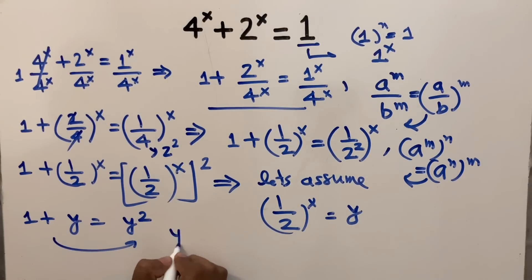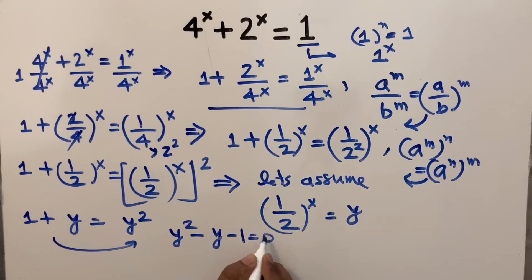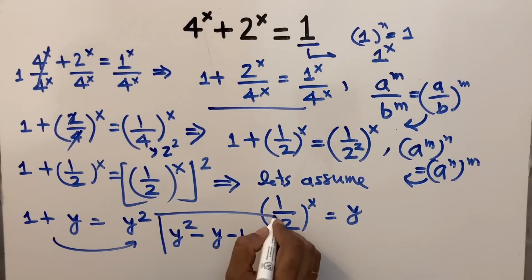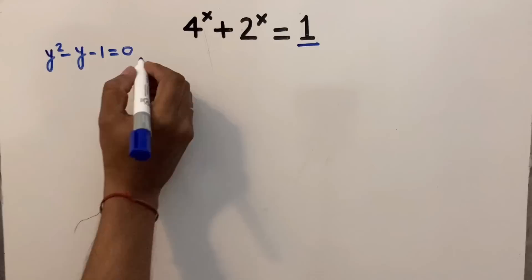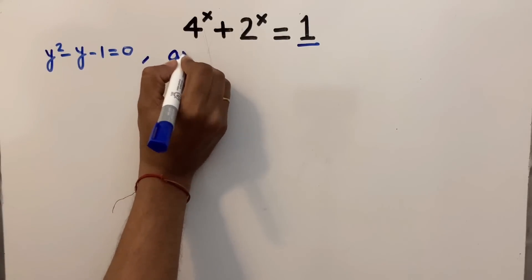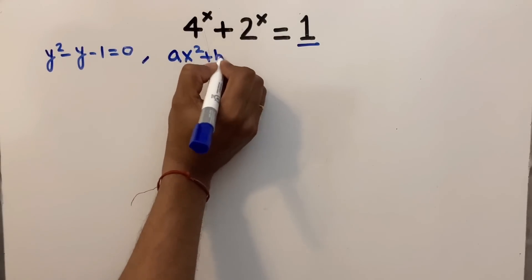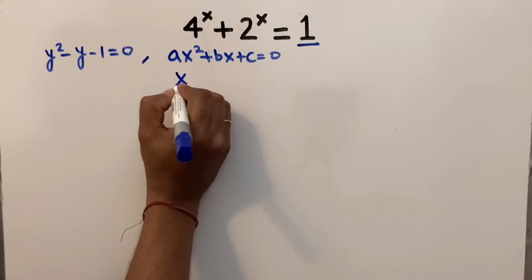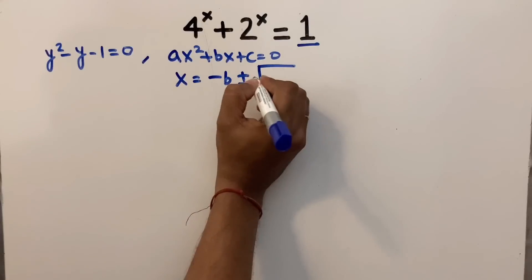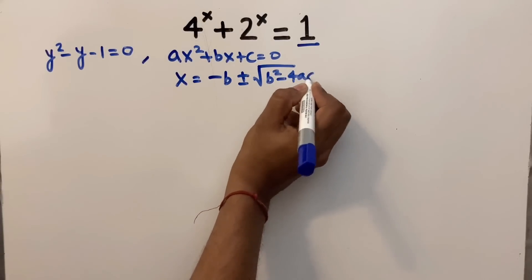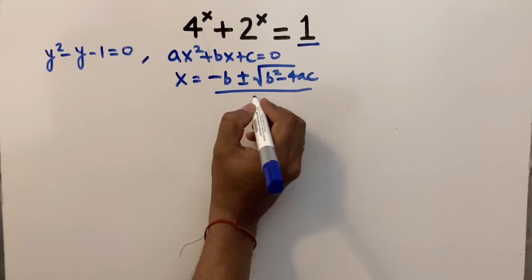Moving all terms to one side, it becomes y squared minus y minus 1 equals 0. This has been simplified to a quadratic equation of second degree. We have to find the value of y by solving this quadratic equation. This quadratic equation is in the standard form ax² + bx + c = 0, with the quadratic formula x equals minus b plus or minus square root of (b² minus 4ac) divided by 2a.